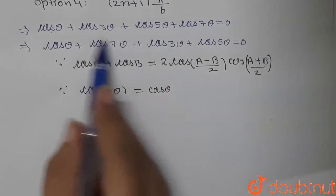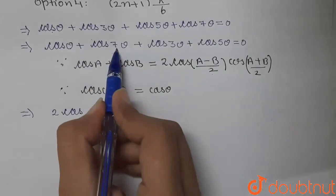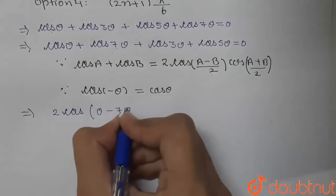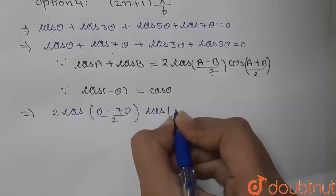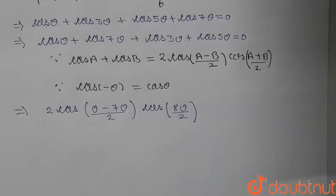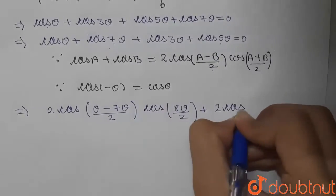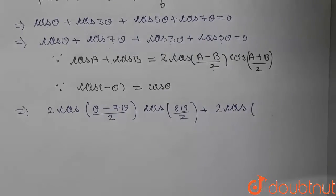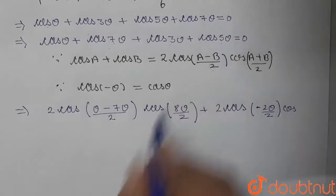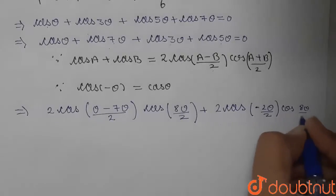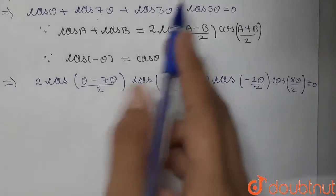Applying cos A + cos B to the first group: cos θ + cos 7θ = 2·cos((θ−7θ)/2)·cos((θ+7θ)/2) = 2·cos(−3θ)·cos(4θ). For the second group: cos 3θ + cos 5θ = 2·cos((3θ−5θ)/2)·cos((3θ+5θ)/2) = 2·cos(−θ)·cos(4θ). The whole expression equals 0.